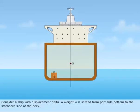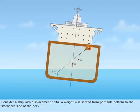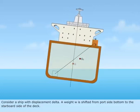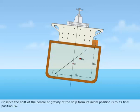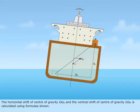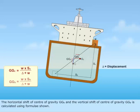Consider a ship with displacement delta. A weight W is shifted from the port side bottom to the starboard side of the deck. SH is the horizontal shift and SV is the vertical shift of the weight. The horizontal shift of the center of gravity of the ship from its initial position G to its final position G1. The horizontal shift of center of gravity GGH and the vertical shift of center of gravity GGV are calculated using the formulae shown.